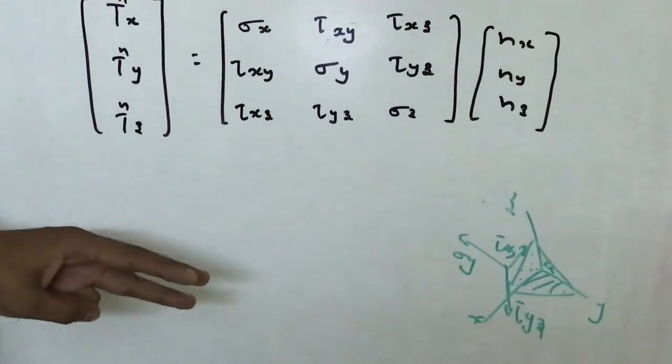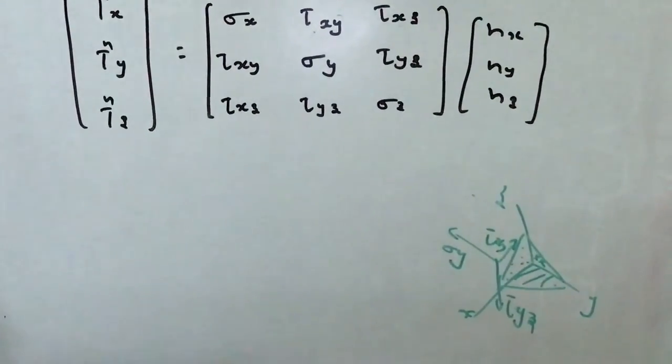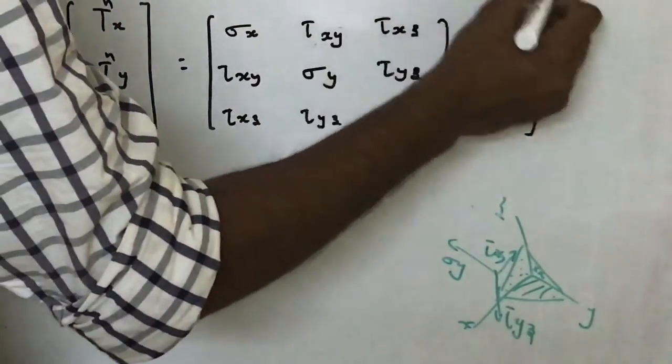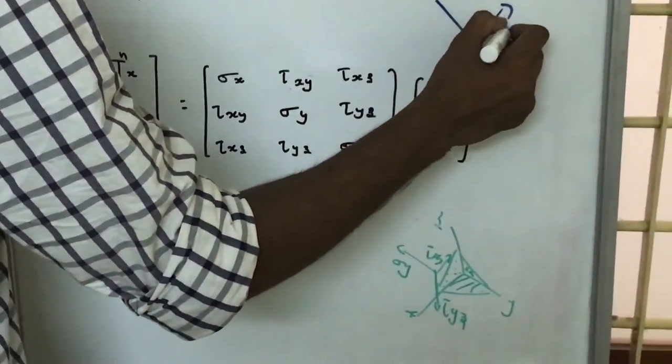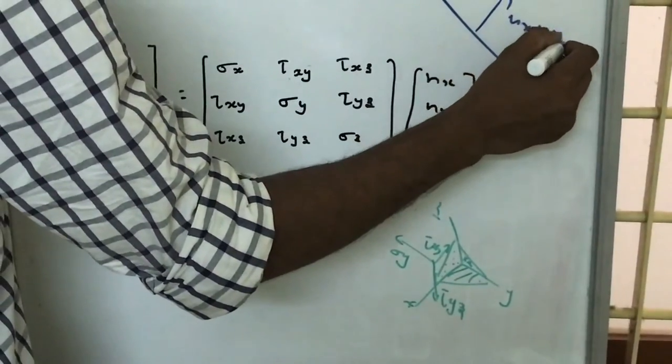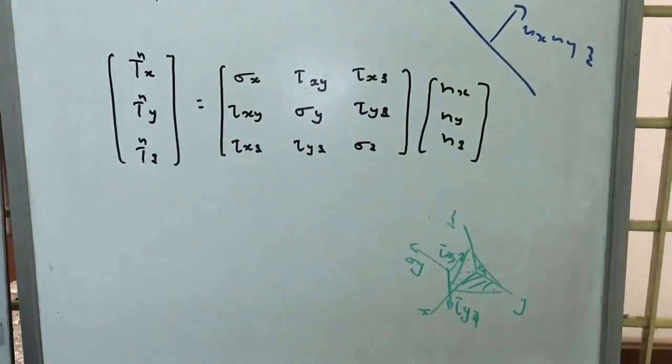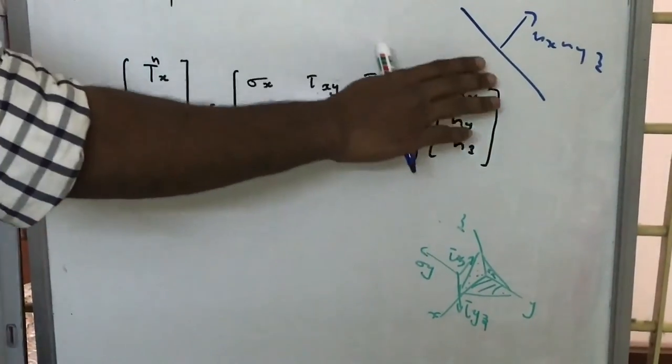So for three mutually perpendicular planes, we have stress. And if we are asked to find the stress at a point, stress at a plane which has a normal nx, ny, nz, then it is simple. Multiply this matrix with the nx, ny, nz, we will get the stress set in that particular plane.